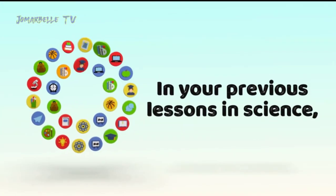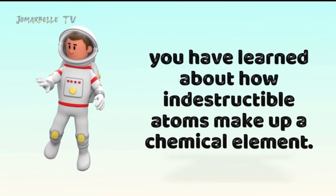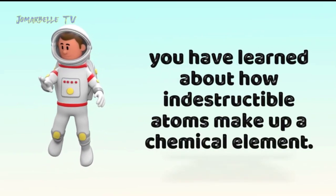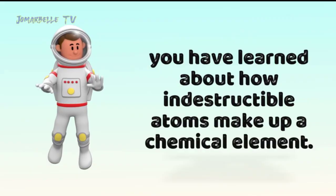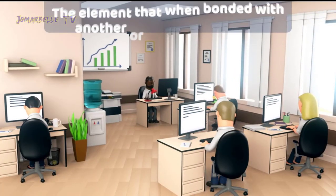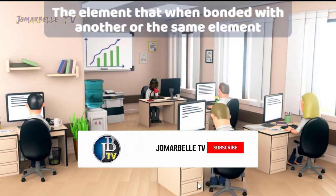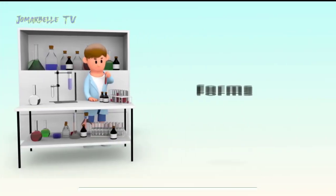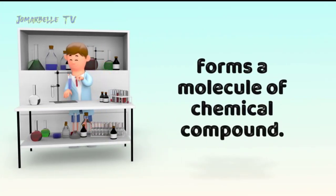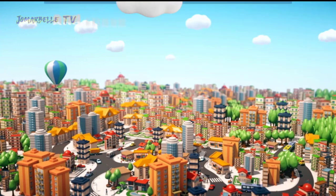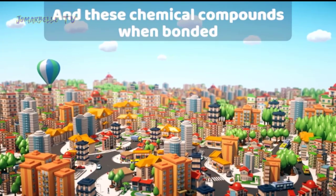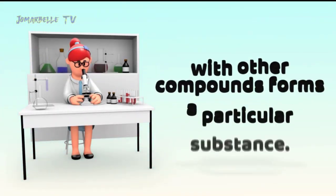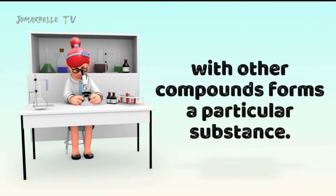In your previous lessons in science, you have learned about how indestructible atoms make up a chemical element. The element that, when bonded with another or the same element, forms a molecule of chemical compound. And these chemical compounds, when bonded with other compounds, forms a particular substance.